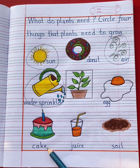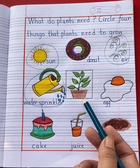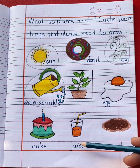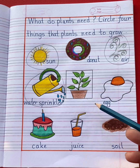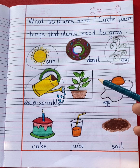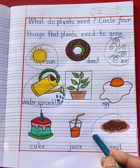This is cake. Plants need cake to grow? No. This is juice. Plants need juice to grow? No. Plants need soil to grow? Yes. So circle soil.